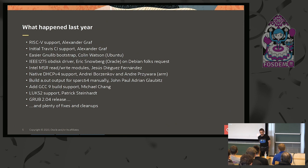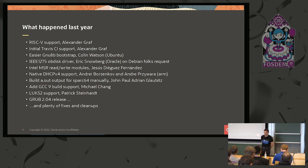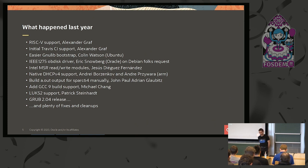Just before the 2.04 release, Michael from SUSE realized that it was not possible to build Grub with GCC 9. So he provided a set of patches which fixed this issue, and currently it is possible to use GCC 9 to build Grub. At the beginning of this year, Patrick introduced Luks2 support into Grub, so we are able to read encrypted boot partitions directly. We had the 2.04 release in the middle of last year, which included most of these features plus plenty of fixes and cleanups.